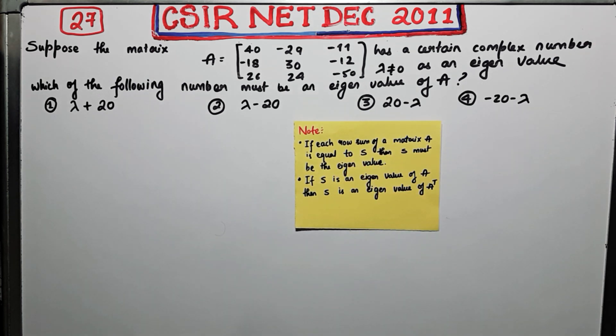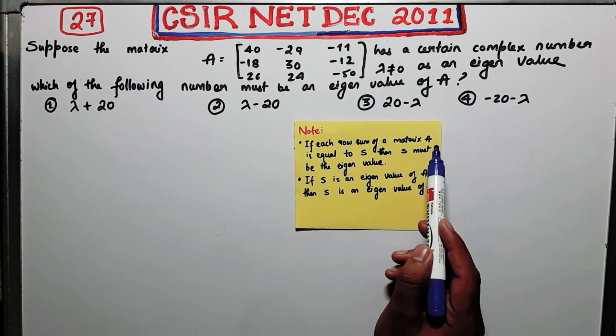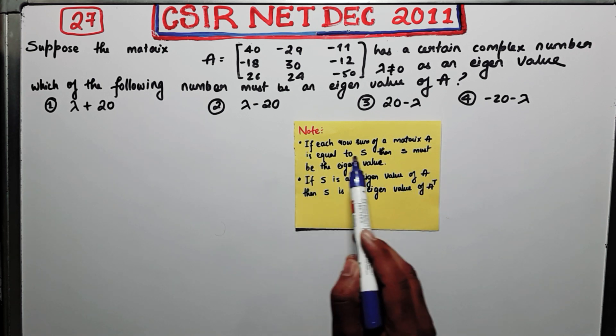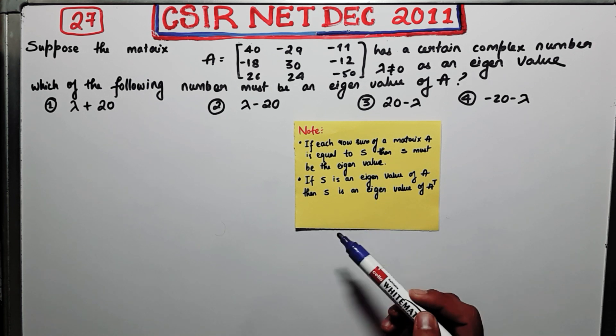So this is the note I am talking about. It says if each row sum of a matrix capital A is equal to S then S must be an eigenvalue of A.